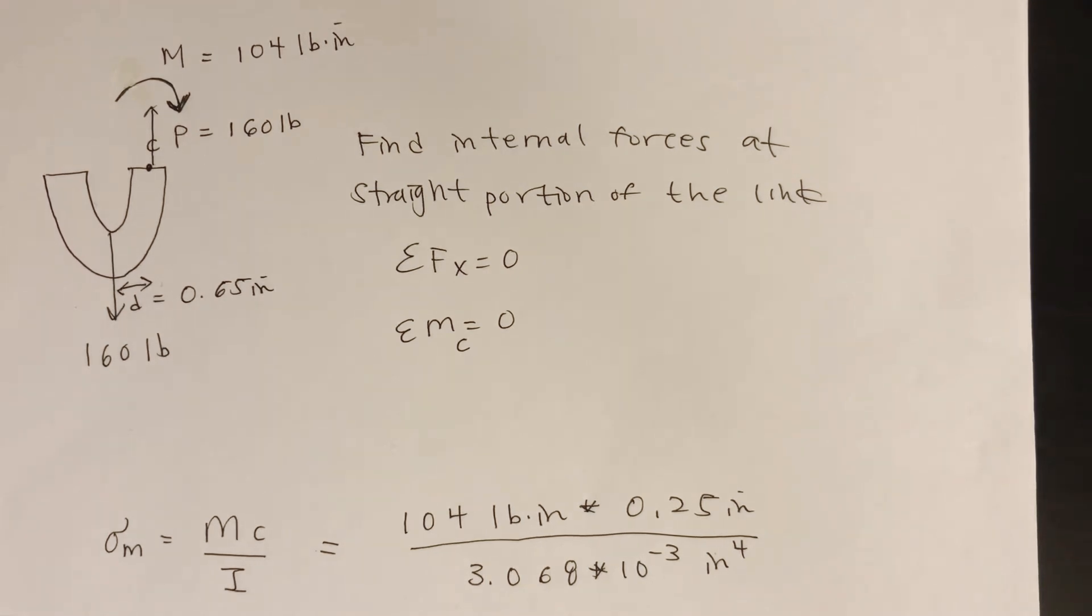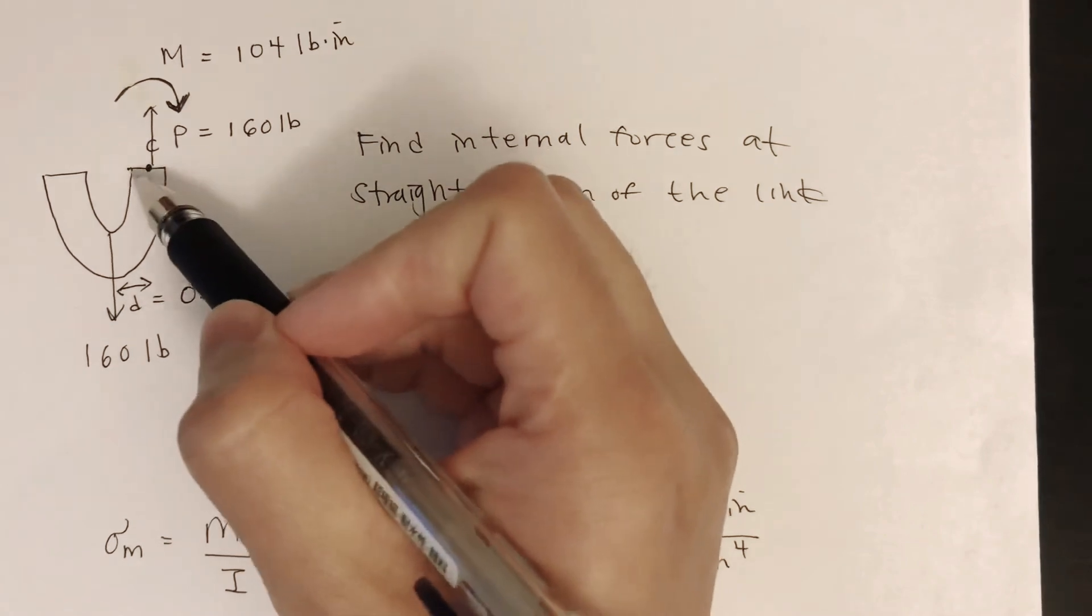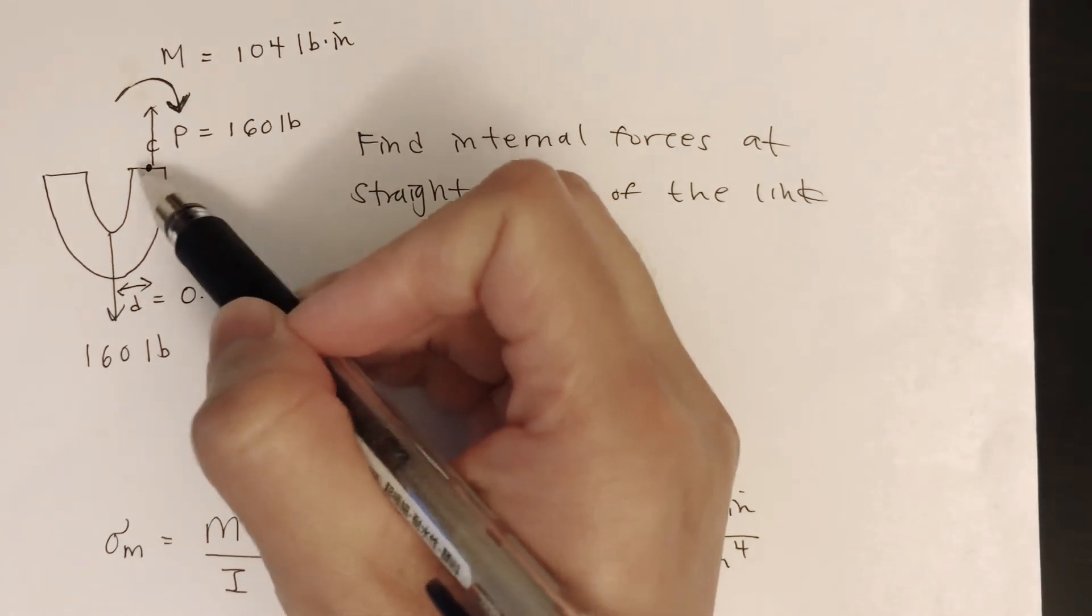Now let's look at slide 11. That's just a picture of open link chains. We are looking for the maximum tensile and compressive stresses in the straight portion of the link, so we're looking at the rightmost and leftmost portion.